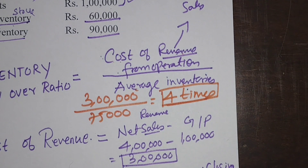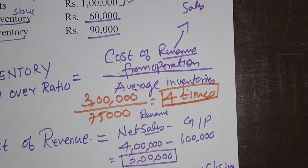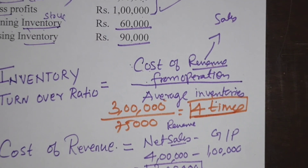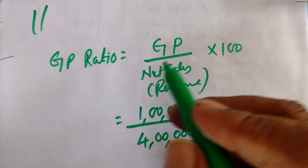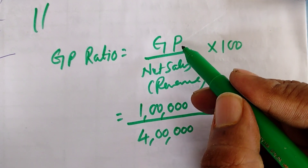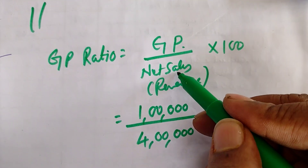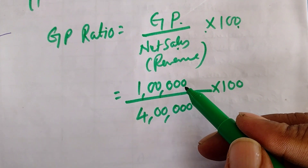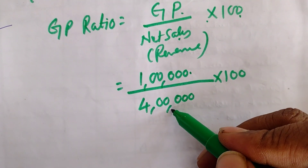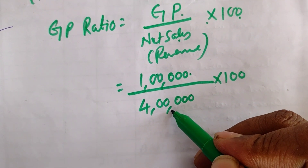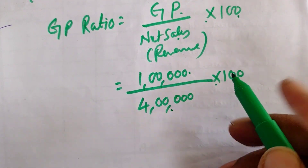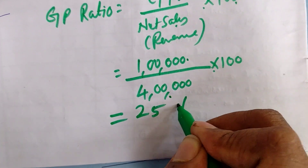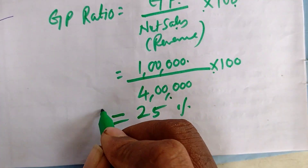Gross profit ratio equals gross profit divided by net sales, multiplied by 100. Gross profit is 1 lakh and net sales is 4 lakhs. Therefore, gross profit ratio = 1 lakh divided by 4 lakhs, multiplied by 100 = 25%.